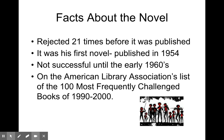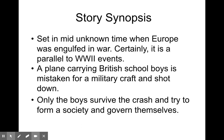Some facts about the novel itself: it was rejected 21 times before it was published. It was first published in 1954, but it was not really successful until the 60s, and it's often challenged because of some of the content. Here's the synopsis of what happens. It's set in an unknown time when Europe is engulfed in a war. Some people assume it's World War II, but we're not actually told that — we just know there is a war going on. It certainly parallels World War II. There's a plane carrying British schoolboys mistaken for an aircraft and shot down onto a deserted island, and only the boys survived the crash. So they try to form a society to govern themselves.